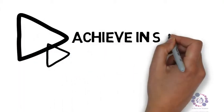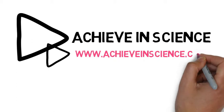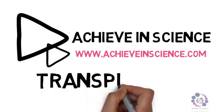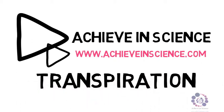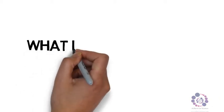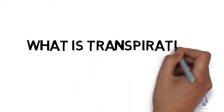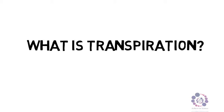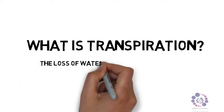Welcome to another Achieving Science video. This video is all about transpiration. Let's just begin by looking at a definition of transpiration. So what is transpiration? Transpiration is the loss of water from a plant through its leaves.